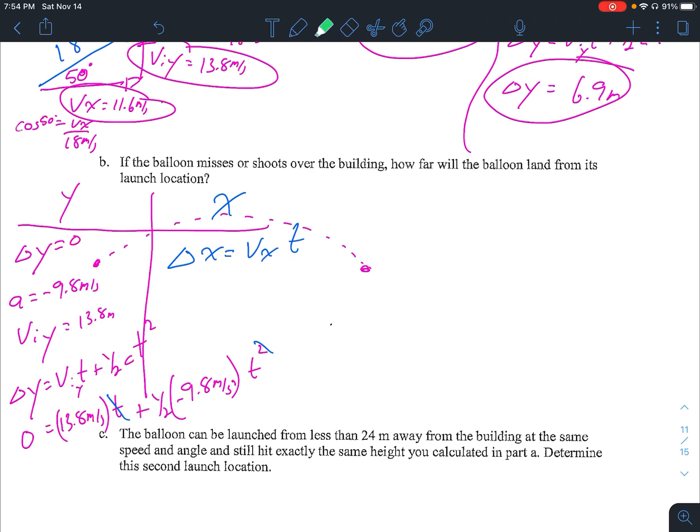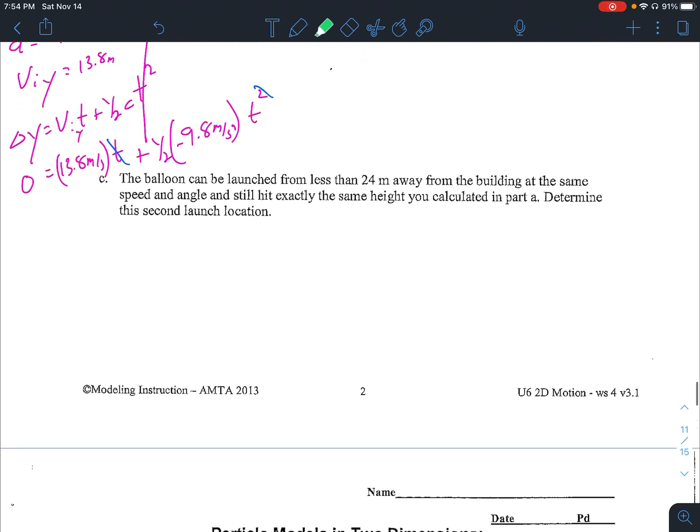So then I can go back to my X direction information. Knowing that I know my time that I just found and my horizontal 11.6, I can find my horizontal displacement. So feel free to refer to Schoology. Really what I wanted to get to was part C.